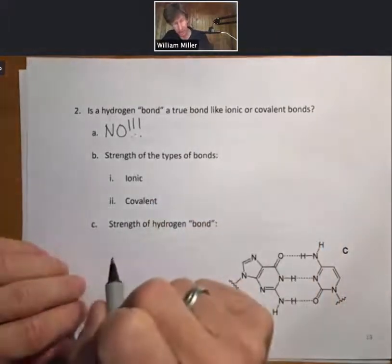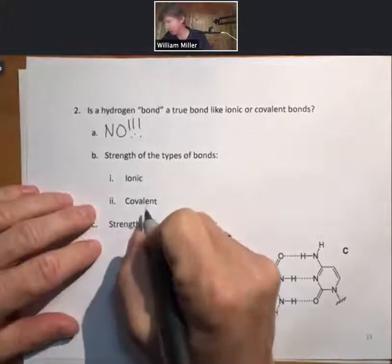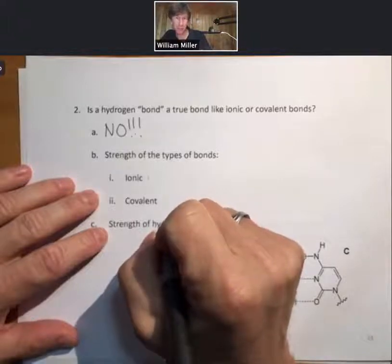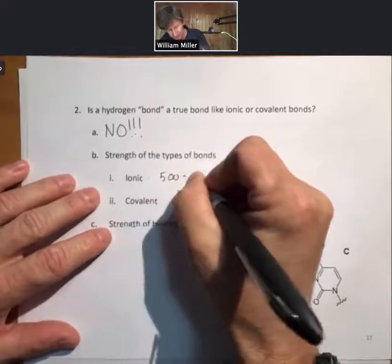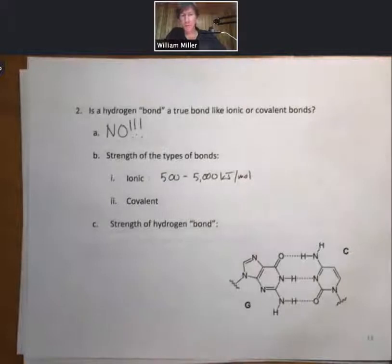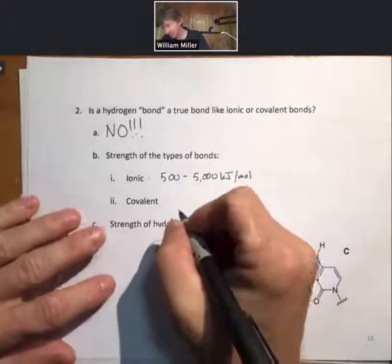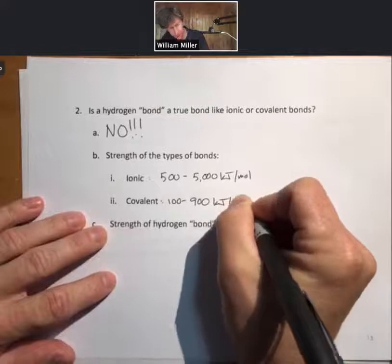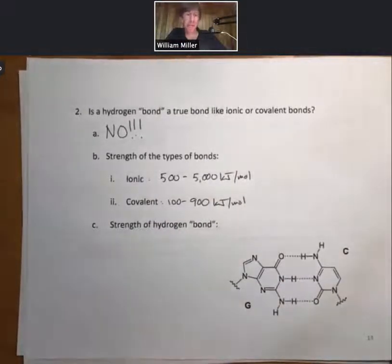And now let's look at the strength of the types of bonds that we've talked about so far. Ionic bonds typically between, as a minimum, 500 but all the way up to 5,000 kilojoules per mole for a mole of ionic bonds, say, in sodium chloride or calcium oxide. Covalent bonds, on the other hand, typically between 100 to 900 kilojoules per mole. And so one trend is that typically ionic bonds are stronger than covalent bonds, though be careful with that sometimes.